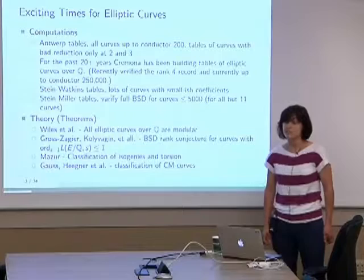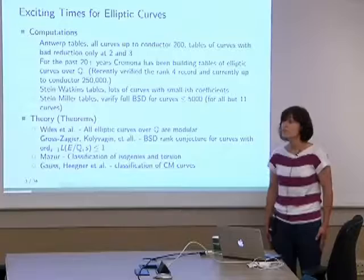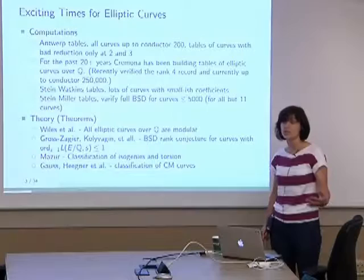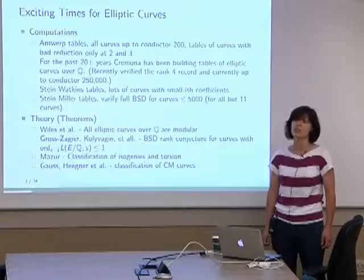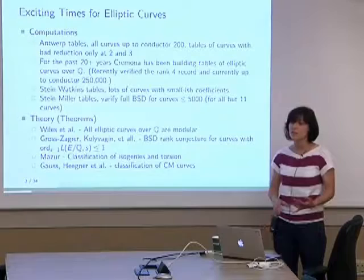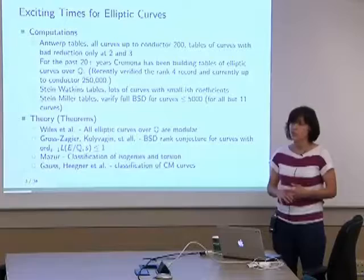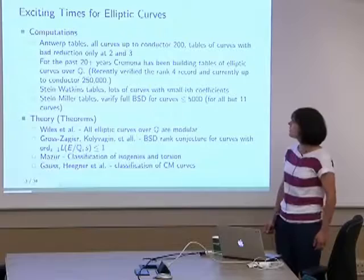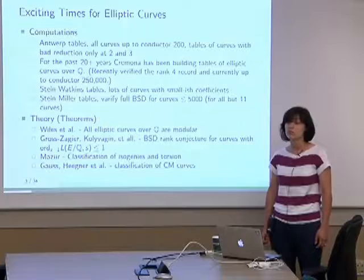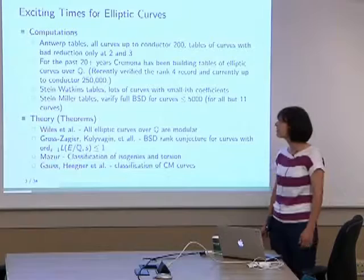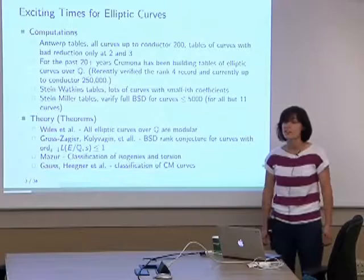So this is computing tables of curves up to isomorphism. He's been finding all the isogeny classes of curves and all the curves in each isogeny class, and also computing many other invariants like the rank, the torsion, and modular degree. He recently, as of the summer, verified the rank 4 curve — it is indeed the first rank 4 curve. On his website, he says he's currently up to conductor 250,000.